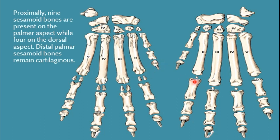The proximal dorsal sesamoid bones are also known as nodular sesamoid bones and are present between the metacarpophalangeal joint. Between the first metacarpal and first phalanx there is no proximal dorsal sesamoid bone. In the first digit we have proximal palmar sesamoid bones and proximal dorsal nodular sesamoid bones, while distally we have distal palmar sesamoid bones which are cartilaginous in nature. This was all about the digits of the forepaw of dog. Thank you.